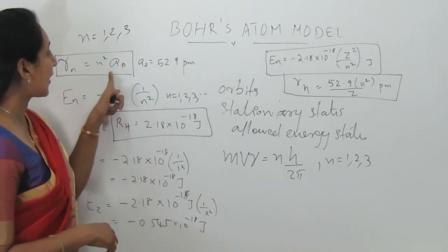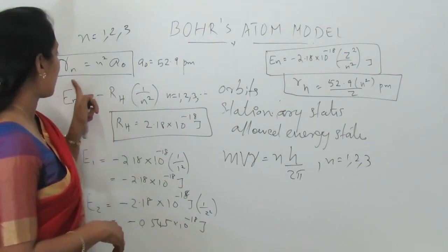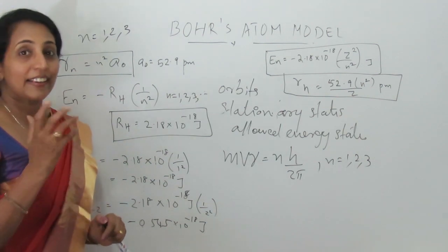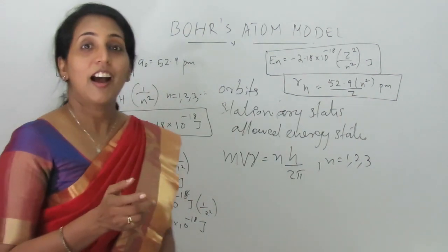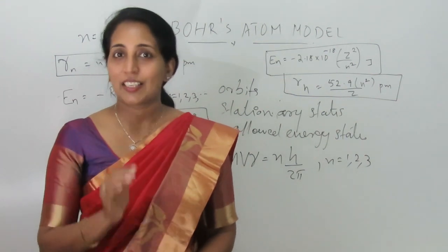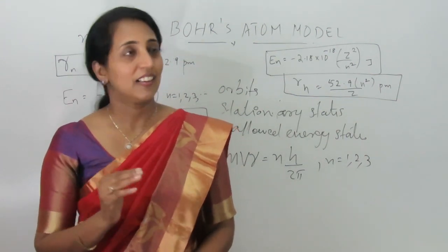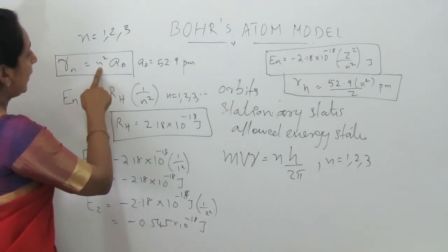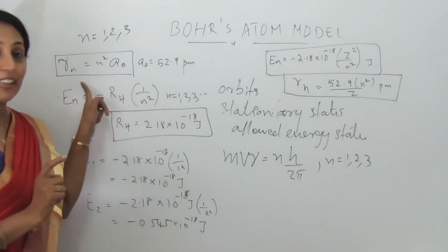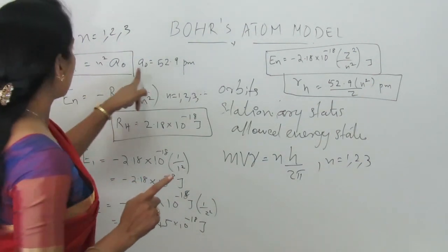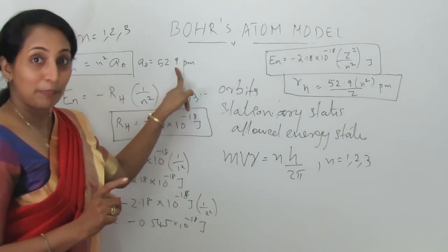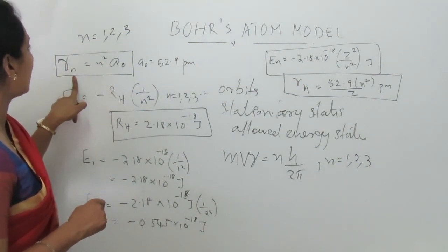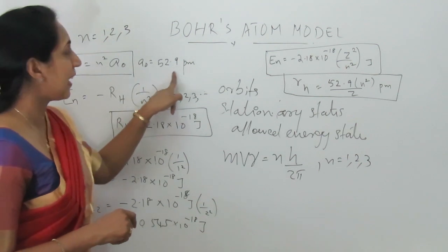Bohr also derived an equation to calculate the radius of the orbit. Generally this equation is represented as Rn = n² × a₀, where n represents the radius of the nth orbit. In the case of hydrogen atom, the value of a₀ is equal to 52.9 picometers. So R1, the radius of the first orbit, is 52.9 picometers.